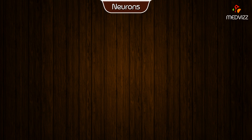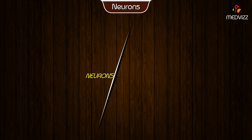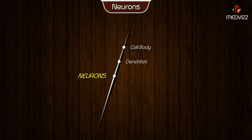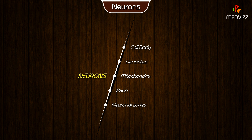Neurons. Under this topic, we will discuss the following: the cell body, dendrites, mitochondria, axon, and neuronal zones.